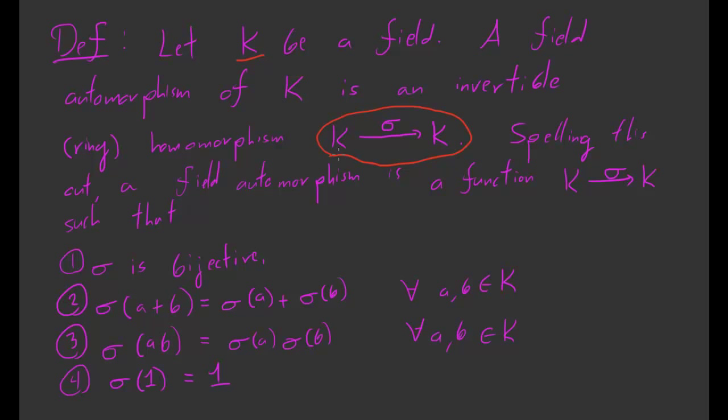Spelling this out: a field automorphism of k is a function σ from k to itself, such that σ is bijective (expressing that σ is invertible), and σ preserves algebraic structure. So σ(a+b) = σ(a) + σ(b), σ(ab) = σ(a)σ(b), and σ(1) = 1. This expresses that σ is a ring homomorphism.